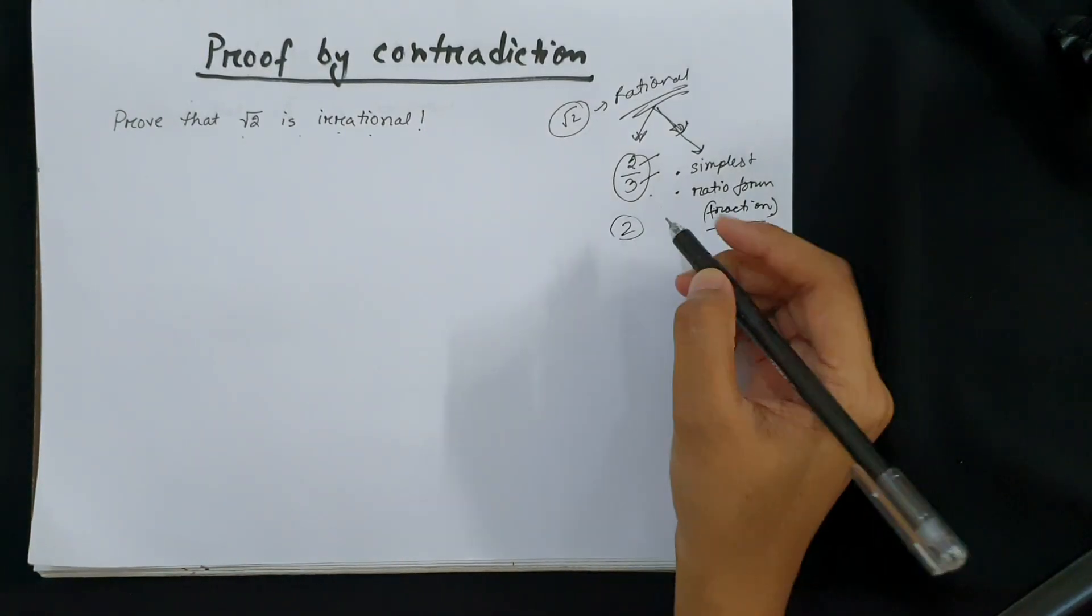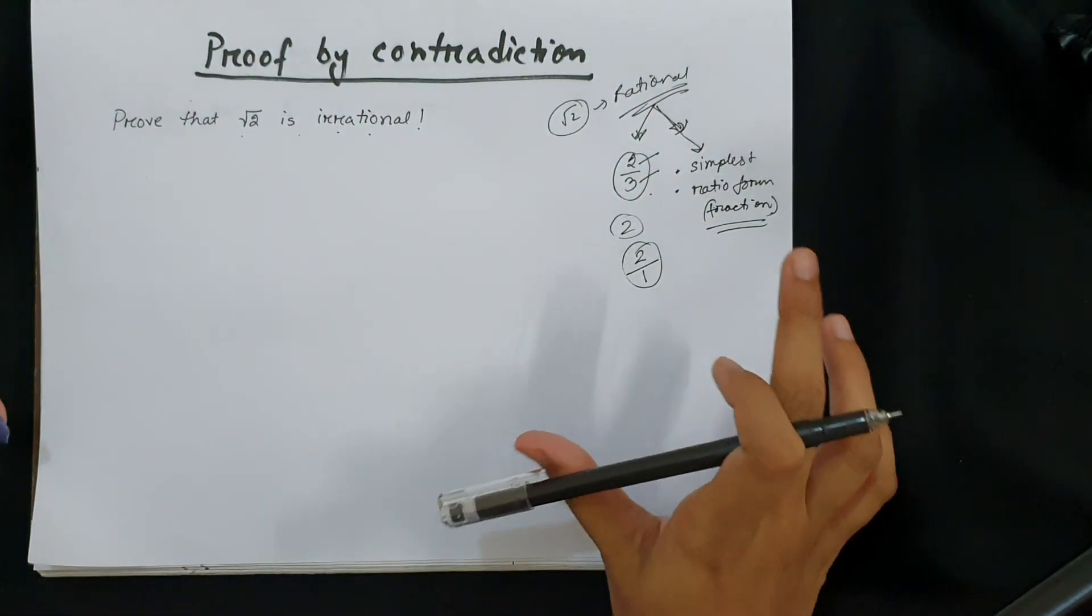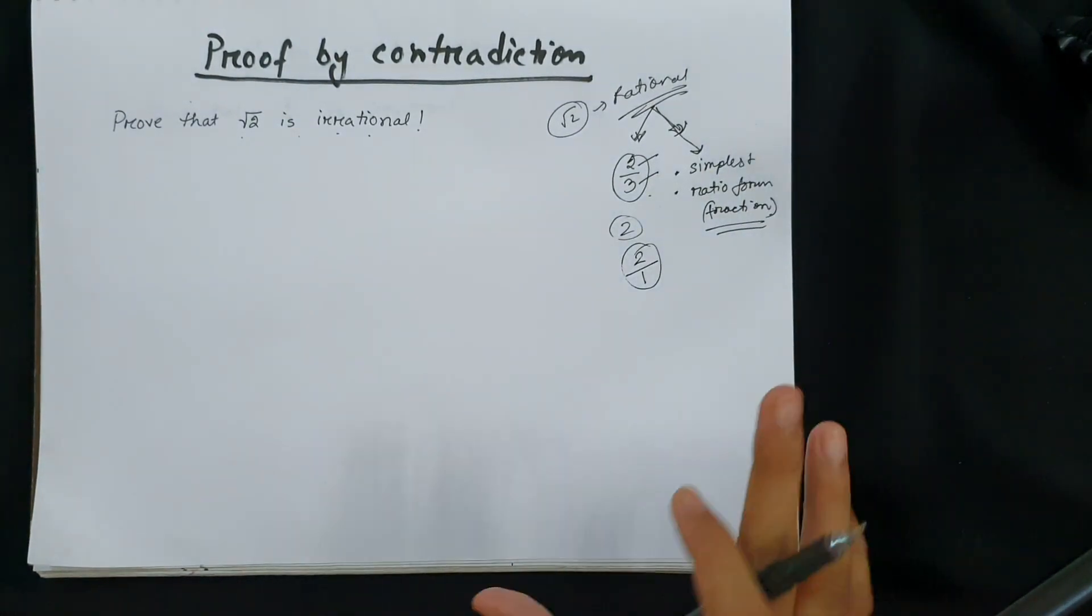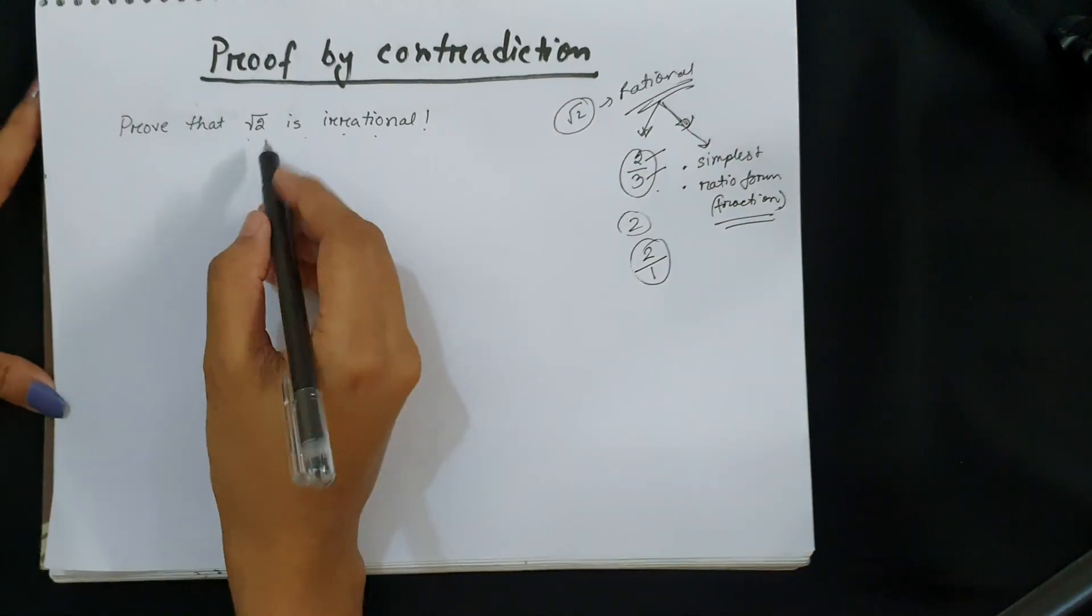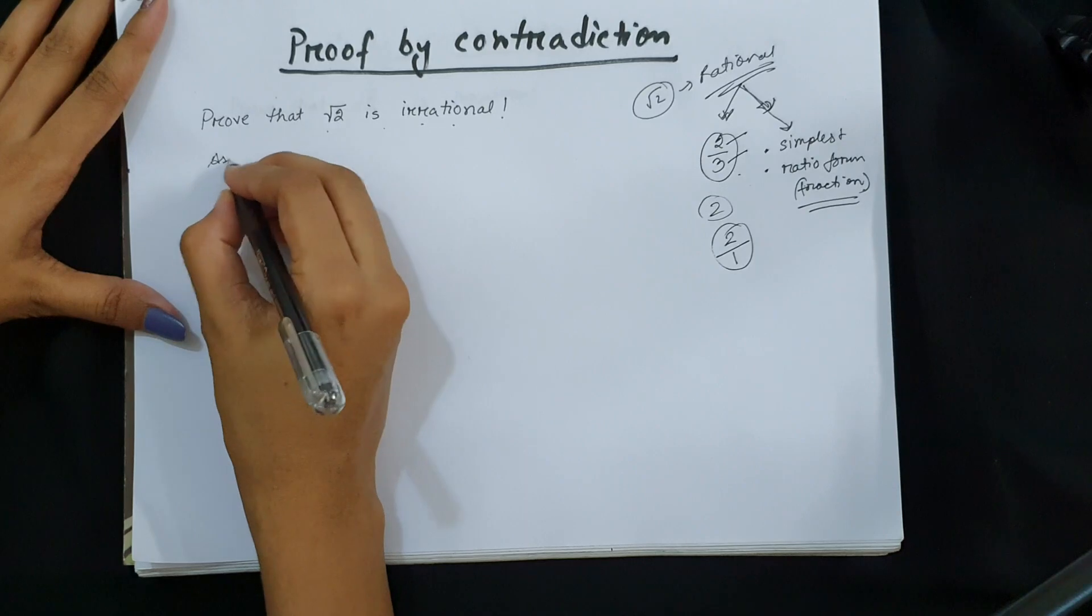So for example, if you're talking about 2 we can write it as 2/1, so for a number to be rational we need the number to be in simplest and ratio format. So if we assume that √2 is a rational number...